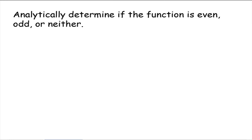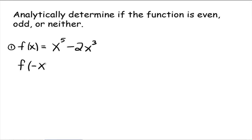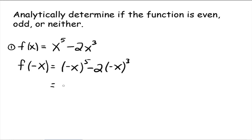Analytically determine if the following functions are even, odd, or neither. First example: f of x equals x to the fifth minus 2x cubed. In order to determine this analytically, we need to figure out what f of negative x is equal to, because both definitions involve f of negative x equaling something. So plugging in, we get negative x to the fifth minus 2 times negative x cubed, which simplifies to negative x to the fifth plus 2x cubed.